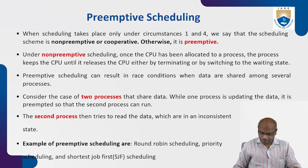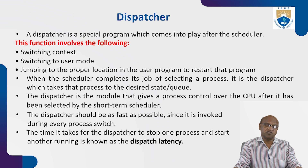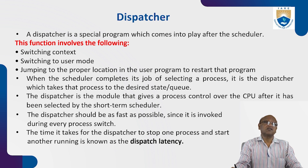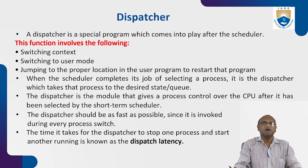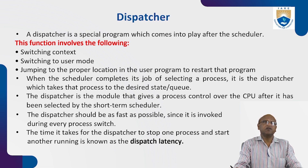The dispatcher is a special program that comes into play after the scheduler. It is also a program available in the OS and helps to execute user programs. The dispatcher performs the following functions: switching context — a technique done by the dispatcher — switching to user mode, and jumping to the proper location in the user program to start the program. For everything the system does, there is a program in the OS behind it.